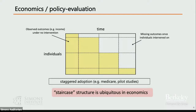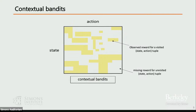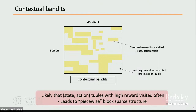Another setting familiar to many here is contextual bandits. In the finite state and action case, you can think of rows as states, columns as actions, and each entry as the observed reward for a particular state-action tuple. If you haven't visited that state-action tuple, that reward is missing. Running any sensible contextual bandit policy, places with higher reward tend to be visited more. If there is continuity between state, actions, and reward, you'll see a piecewise block structure when plotting this data.